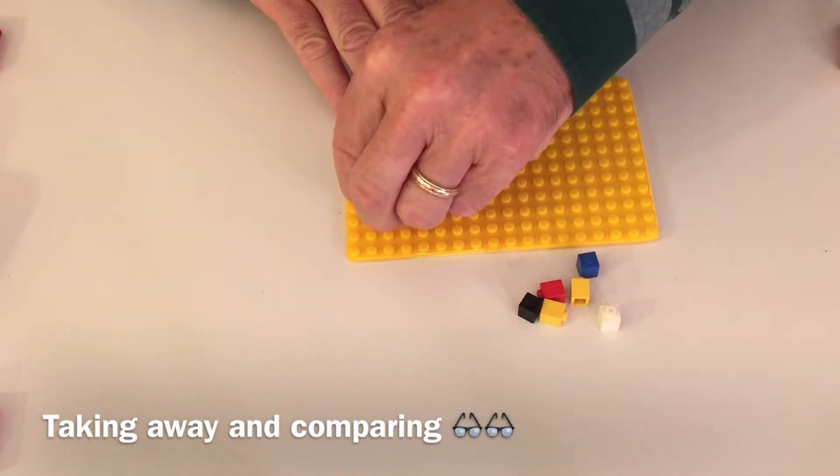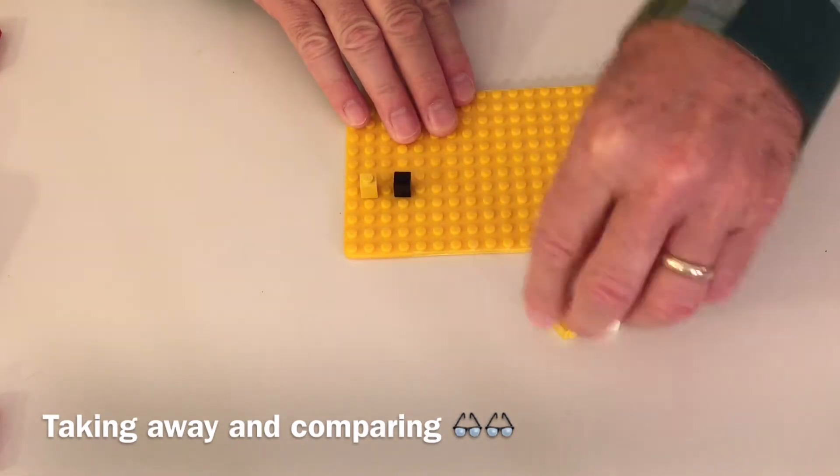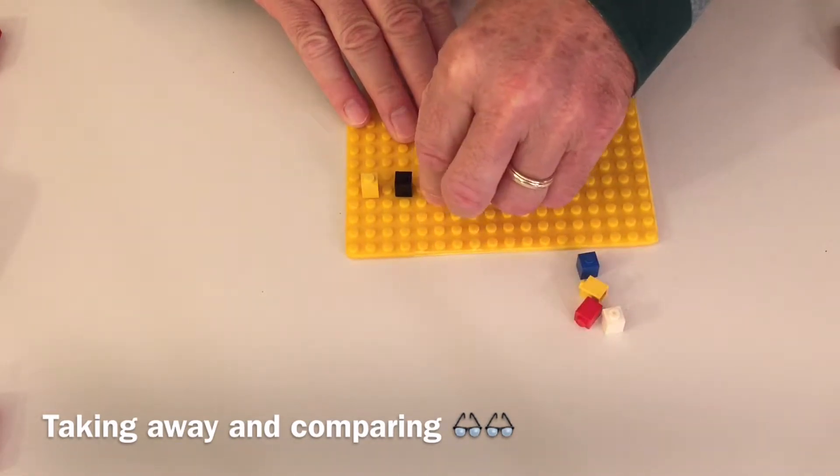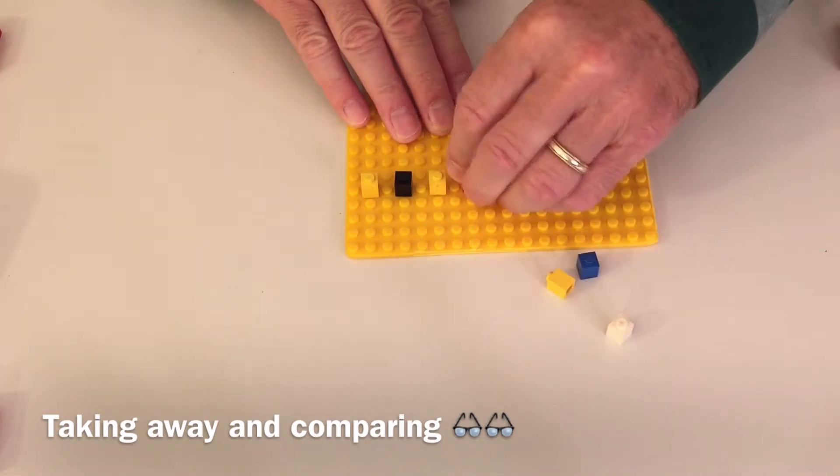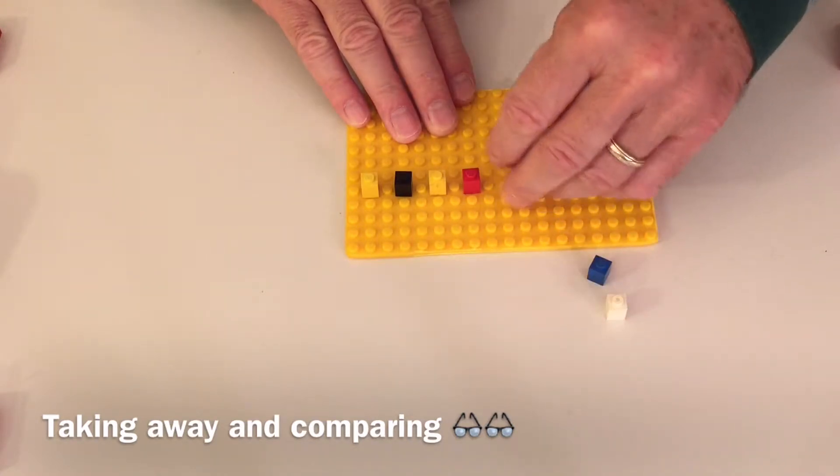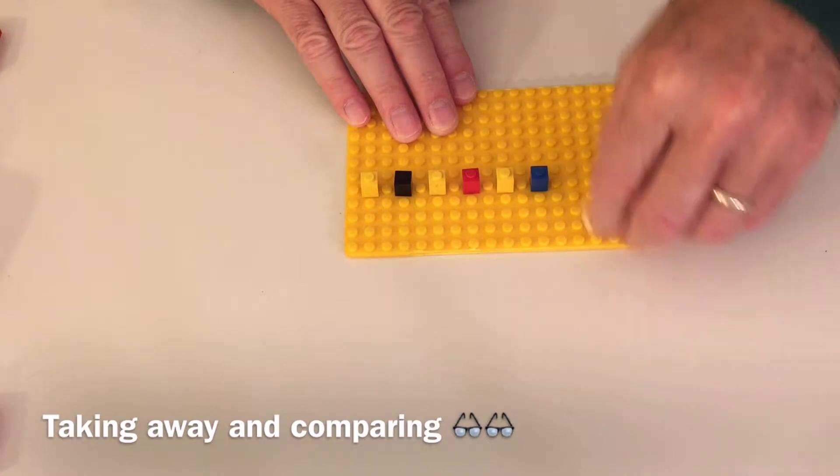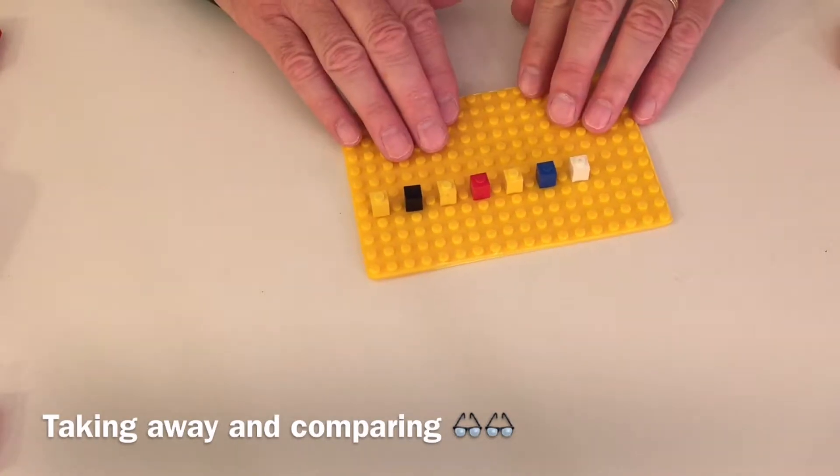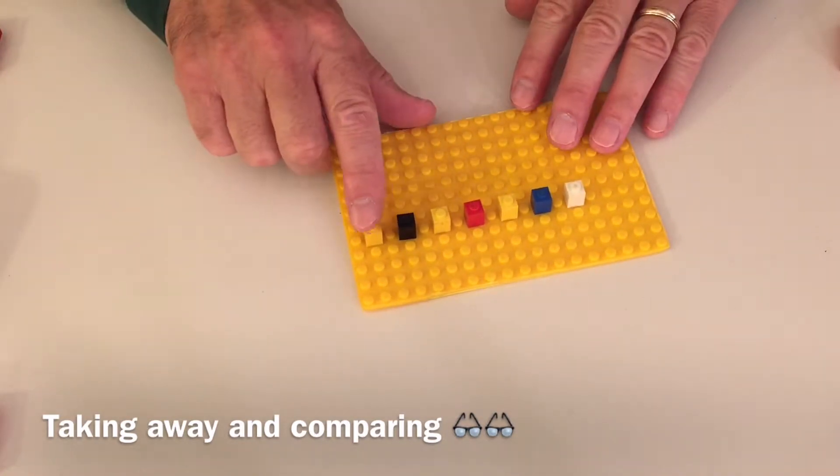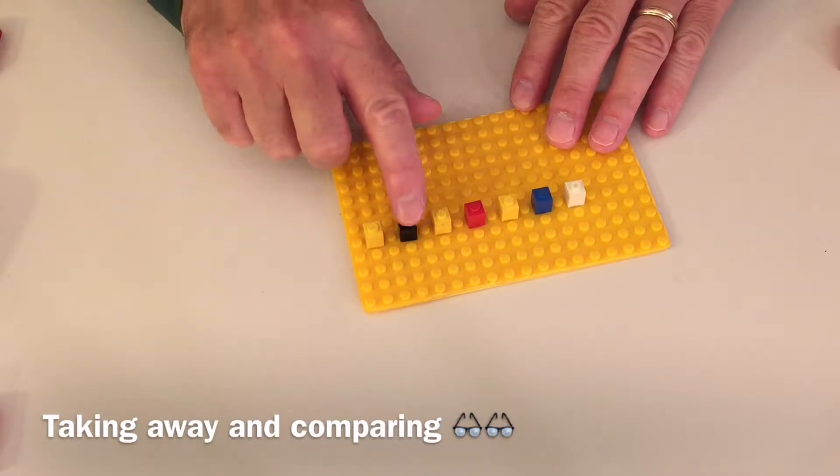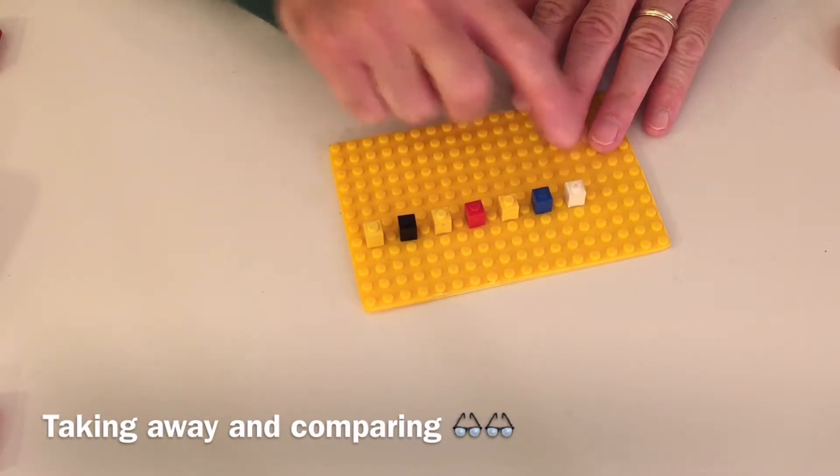One, two, three, four, five, six, and seven. Now we have seven one dot blocks.